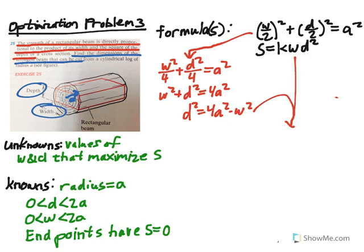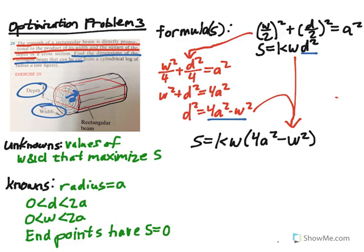Dropping D² = 4A² − W² into the strength formula gives: S = K·W·(4A² − W²). Instead of solving for D and re-squaring, we directly replace D² with that expression. Expanding: S = 4A²·K·W − K·W³. In physics-style alphabet soup, put variables last: A and K are constants, W is the variable.